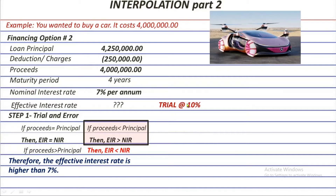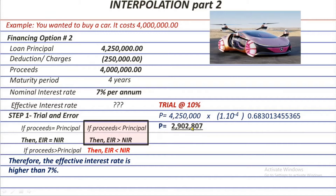Now let's compute the present value of the principal and the interest using 10%. Starting with the principal: principal times (1 + i) raised to the power of negative n. Substituting, we have 4,250,000 times 1.10 raised to the power of negative 4. The factor is 0.683013455365, and multiplying gives us a present value of principal of 2,902,807.